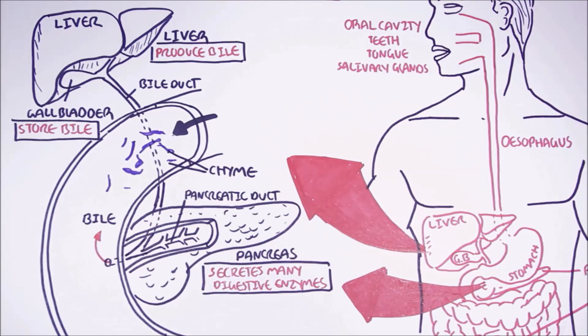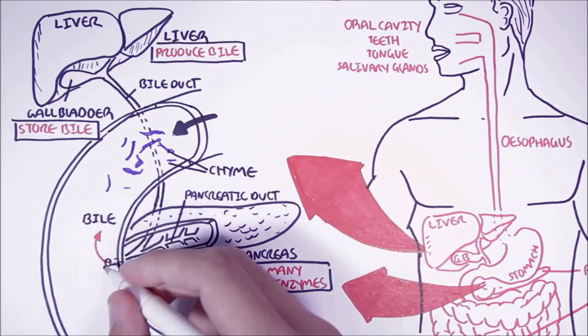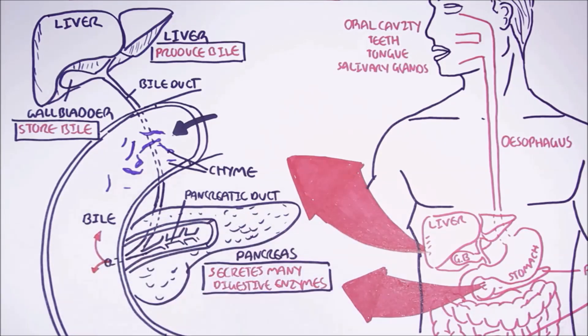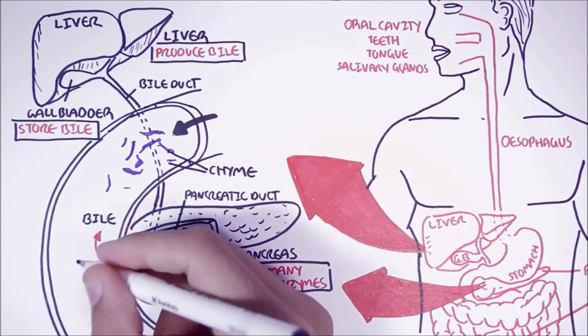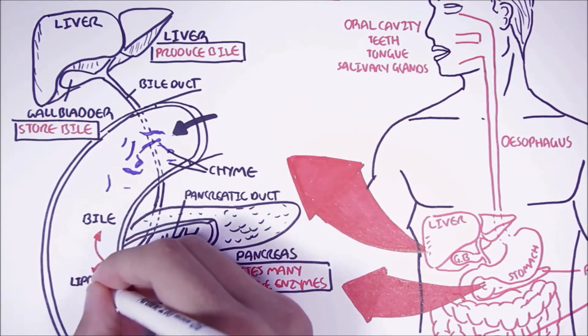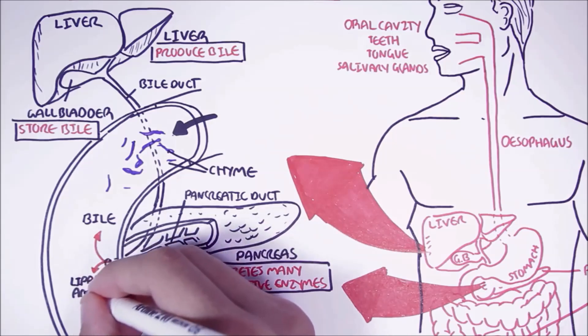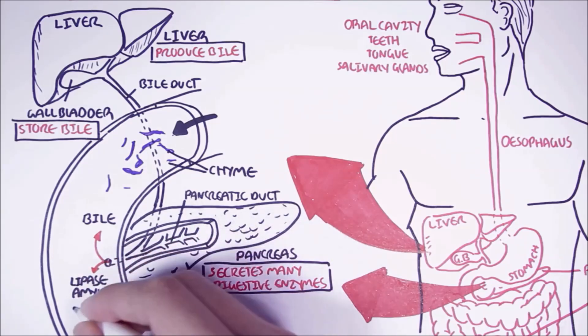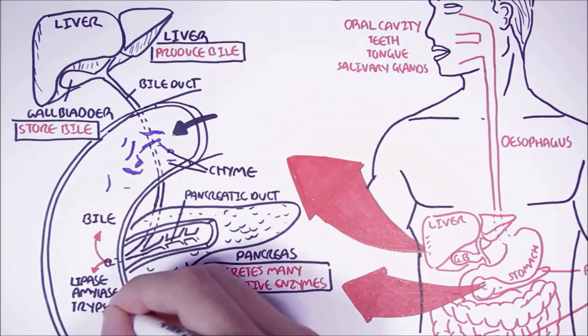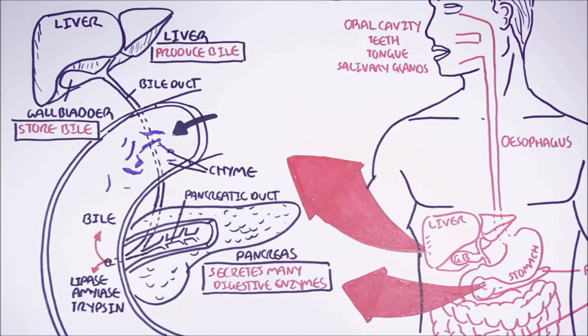These pancreatic digestive enzymes will be secreted into the small intestine through the pancreatic duct. The pancreatic duct connects with the bile duct and consequently to the small intestine. The main enzymes secreted by the pancreas for digestion are lipases for lipid digestion, pancreatic amylase for carbohydrate digestion, and protease that helps in protein digestion.